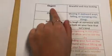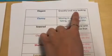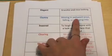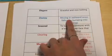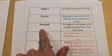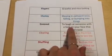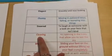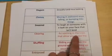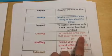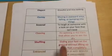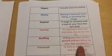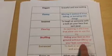Let's have a look at these words. 'Elegant' means graceful and nice looking. 'Clumsy' means moving in awkward ways, falling or bumping into things. 'Sneered' means to laugh at someone with a look on your face that isn't kind. 'Clearing' is an opening in the trees that allows you to see the sky. 'Shuffling' means sliding your feet on the ground without lifting up your feet completely.